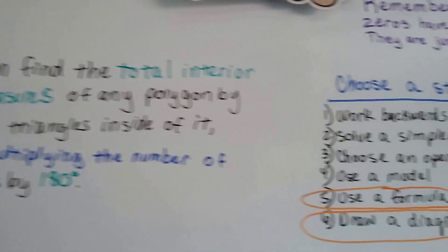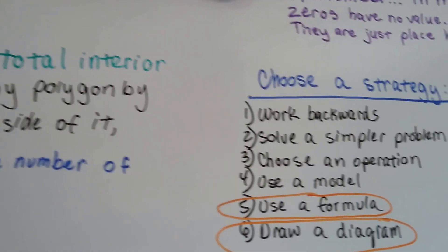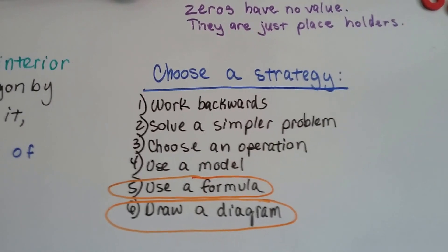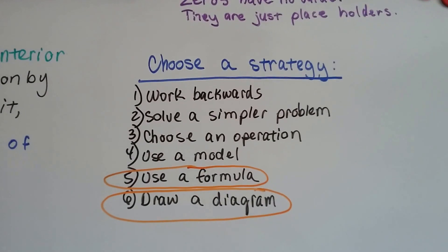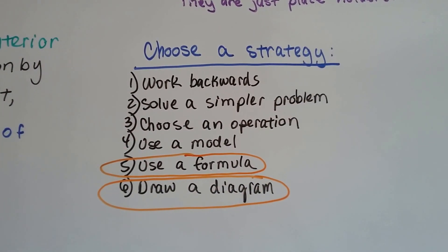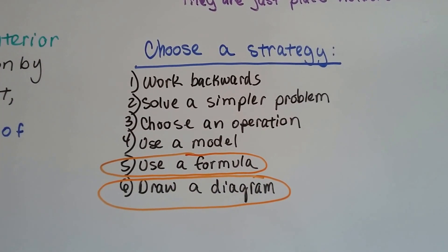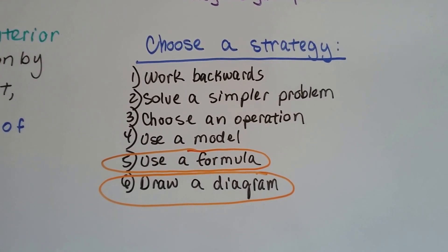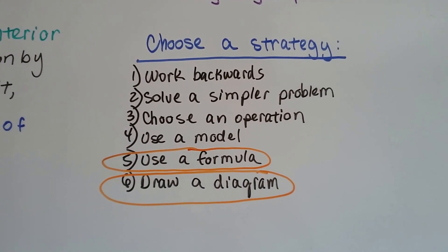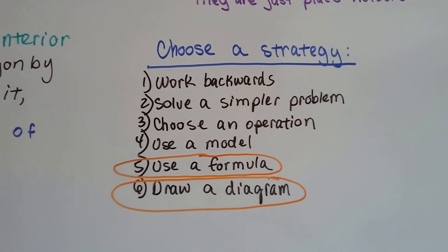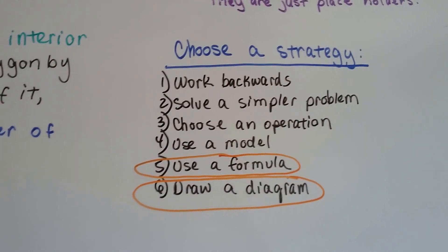When we problem solve, we choose a strategy. We can work backwards, we can solve a simpler problem, we can choose an operation or use a model, or we could use a formula or draw a diagram. We're going to use a formula and draw a diagram in this one, but not in that order — we're going to do the diagram first.